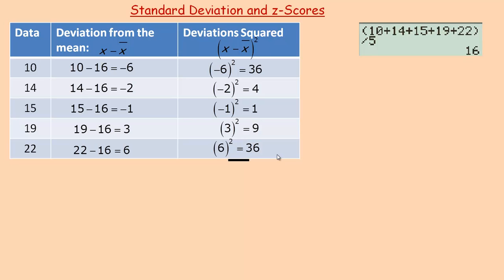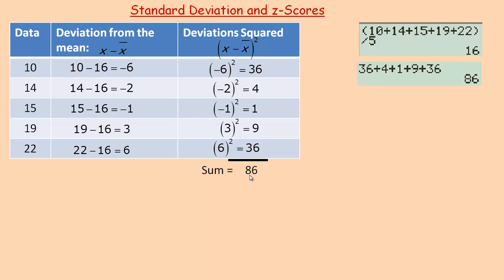Now what I need to do is add all those up — find the sum of them. So I'm going to add 36, 4, 1, 9, and 36. And so that gives me 86. So the sum of all the deviations squared is 86.